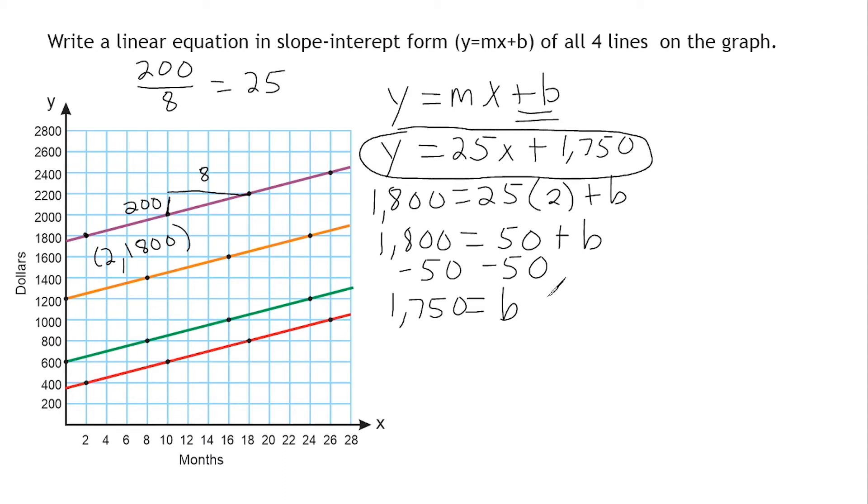All right, let's go ahead and find the equation for this orange line here. Now, one thing that you may have noticed right away is that all four lines are parallel to each other. And any lines that are parallel to each other will always have the same slope. So that's going to make our work a lot easier. We know that the slope of this line is going to be 25, as will be for this line and for this line.